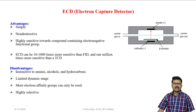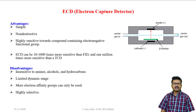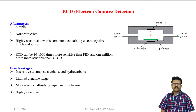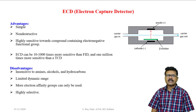Advantages of electron capture detector: it is simple in construction and, most importantly, it is non-destructive — it does not have any effect on the sample, so we can collect and reuse the sample. It is highly sensitive for electronegative compounds and can be 10 to 1000 times more sensitive than flame ionization detector, and 1 million times more sensitive than thermal conductivity detector. Disadvantages: it is insensitive to amines, alcohols, and hydrocarbons. It has a very limited dynamic range and is limited only to samples with high electron affinity, meaning it is highly selective.